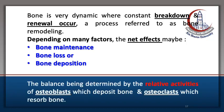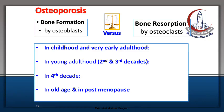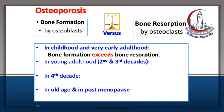The balance between the two processes is determined by the relative activities of osteoblasts, which deposit bone, and osteoclasts, which resorb bone. In childhood and early adulthood, bone formation exceeds bone resorption. The bone mass peaks in the second to third decades of life.